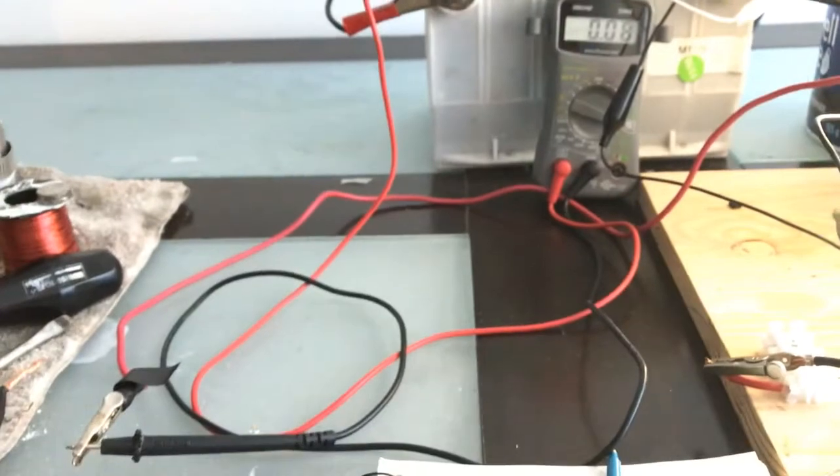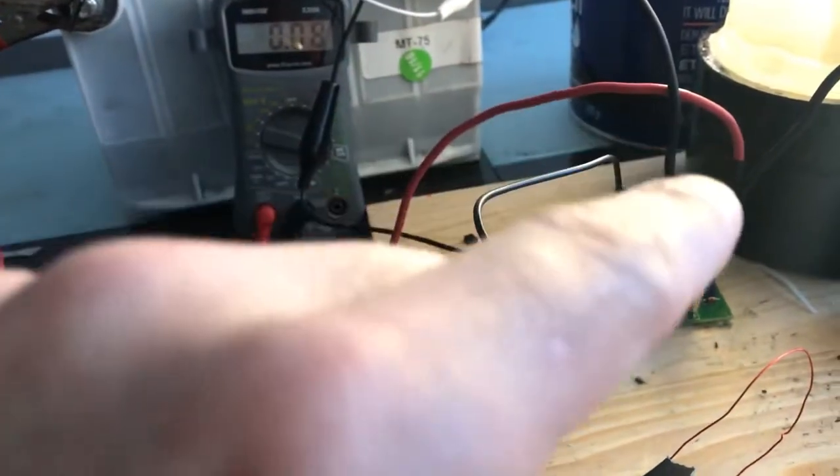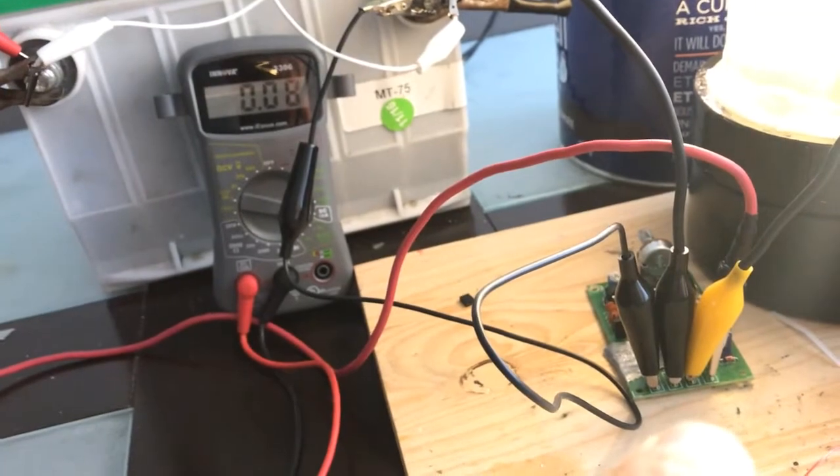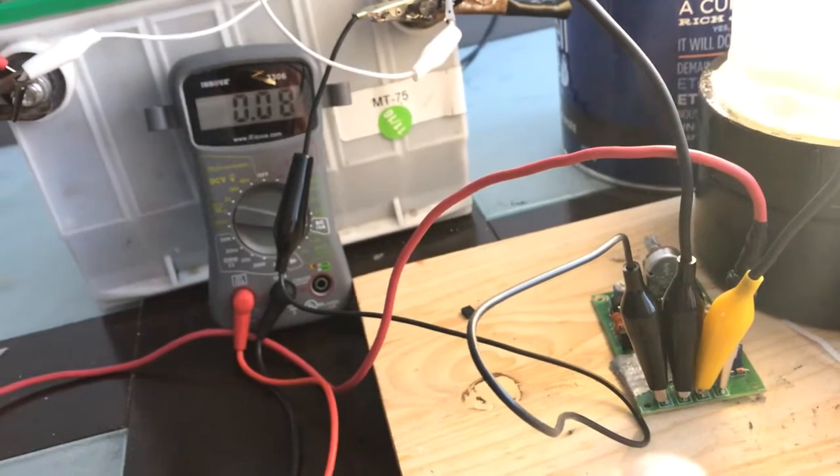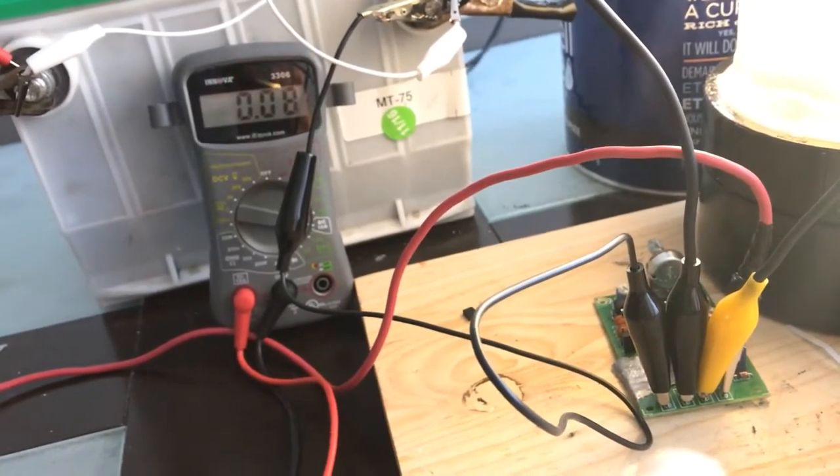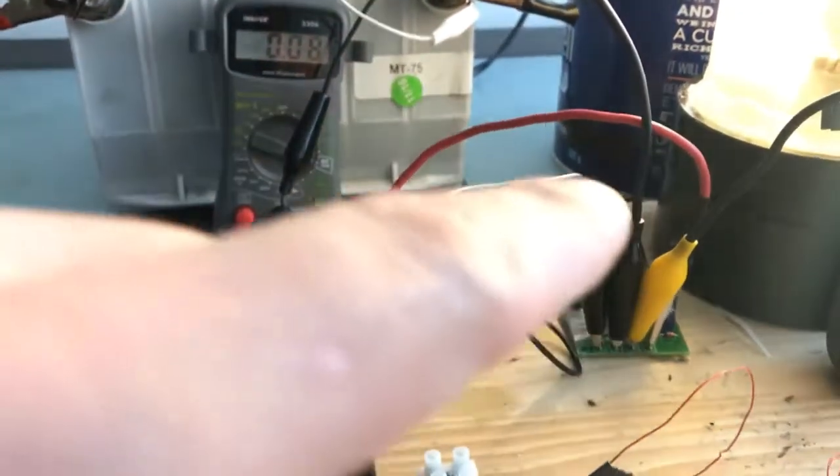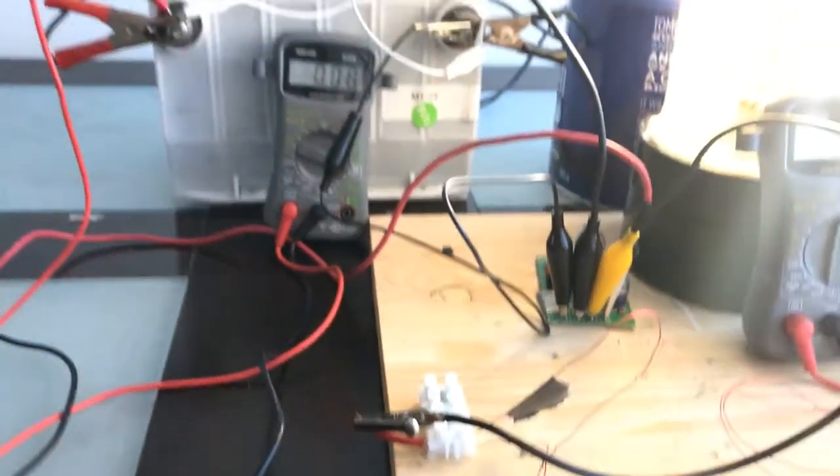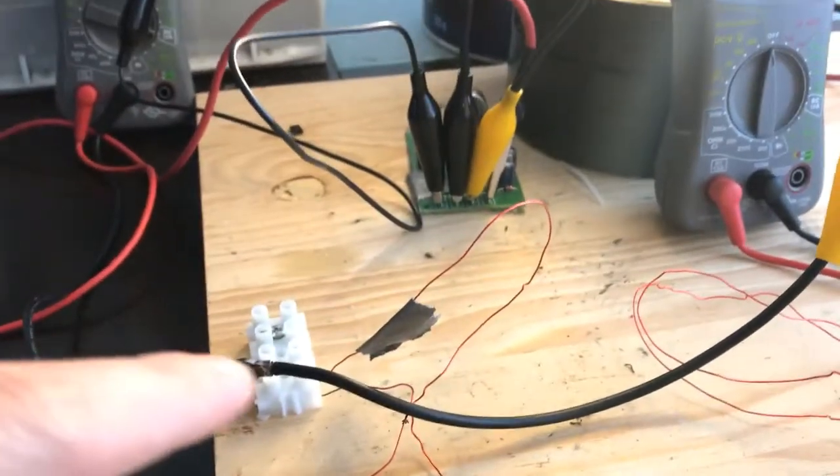So that's the power that we're using. There's no way around that, that's what we're using. We're using 0.08 of an amp right now. Coming out from the PWM is the positive wire which is right here, it's got the yellow tag on it.